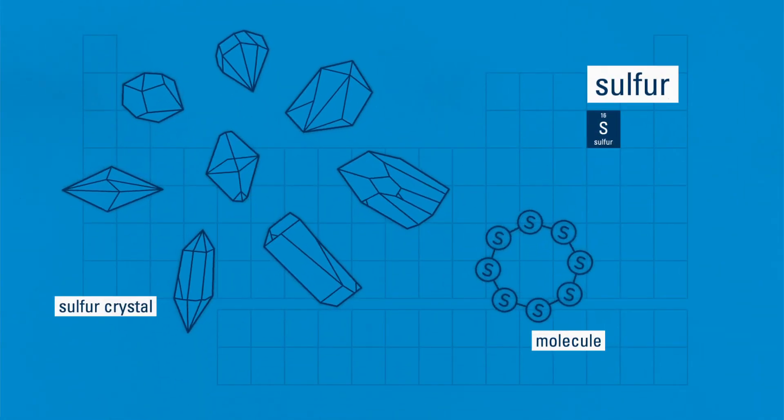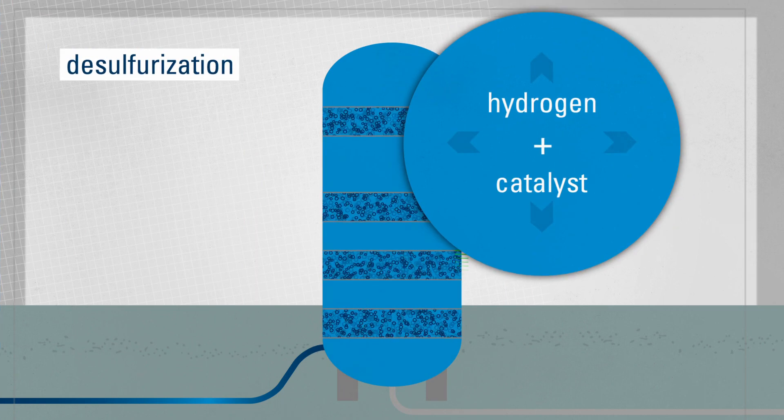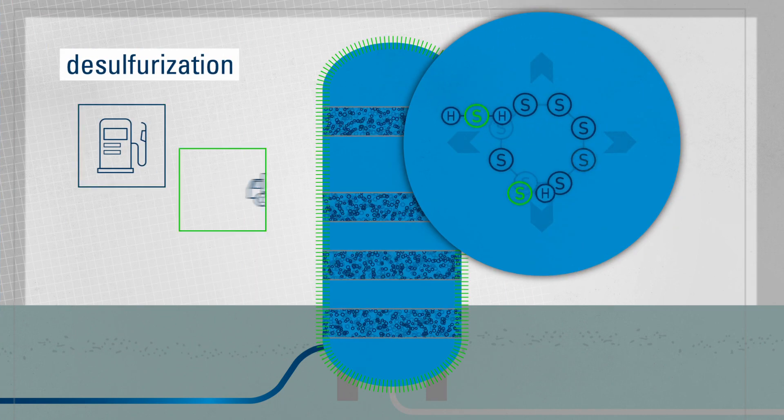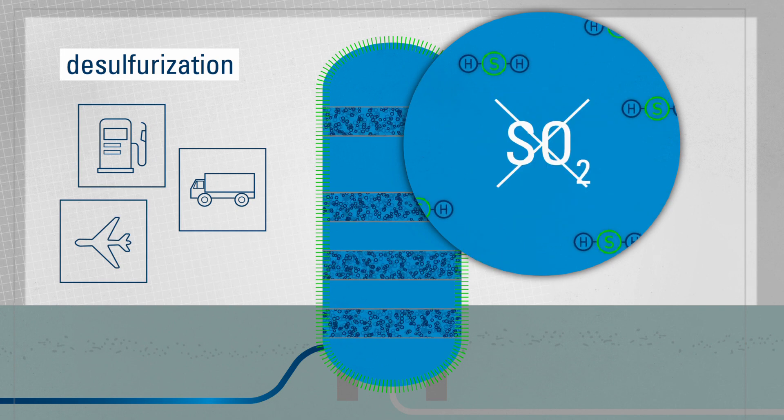The sulfur in the crude is bound with the help of hydrogen and a catalyst. During the subsequent combustion of gasoline, diesel, or kerosene, sulfur dioxide, a pollutant, is then prevented from being released.